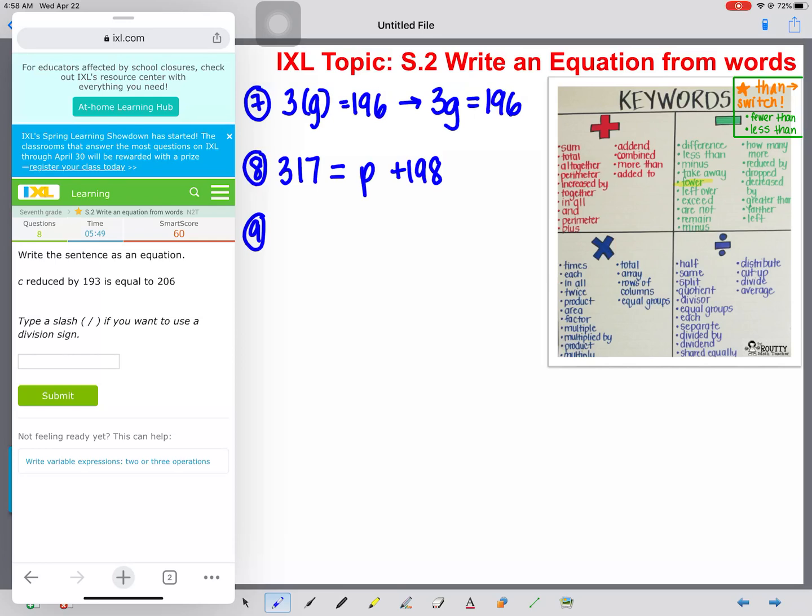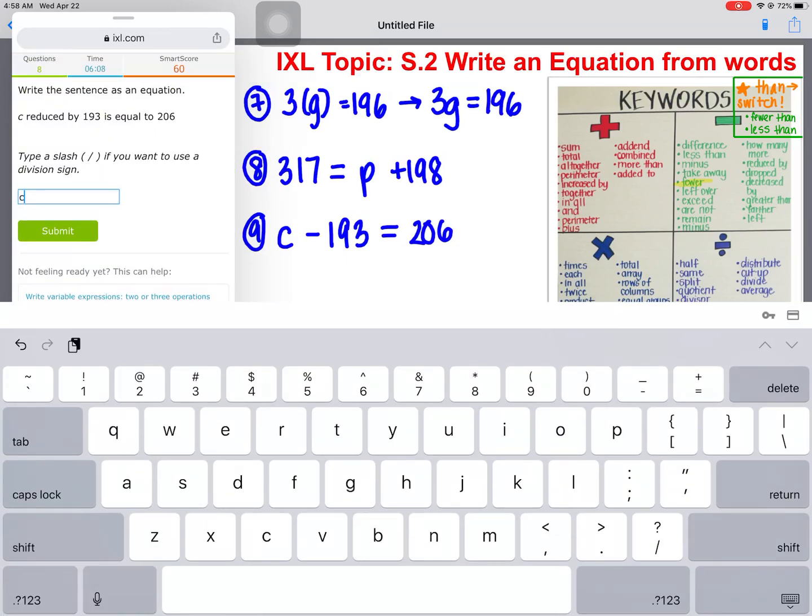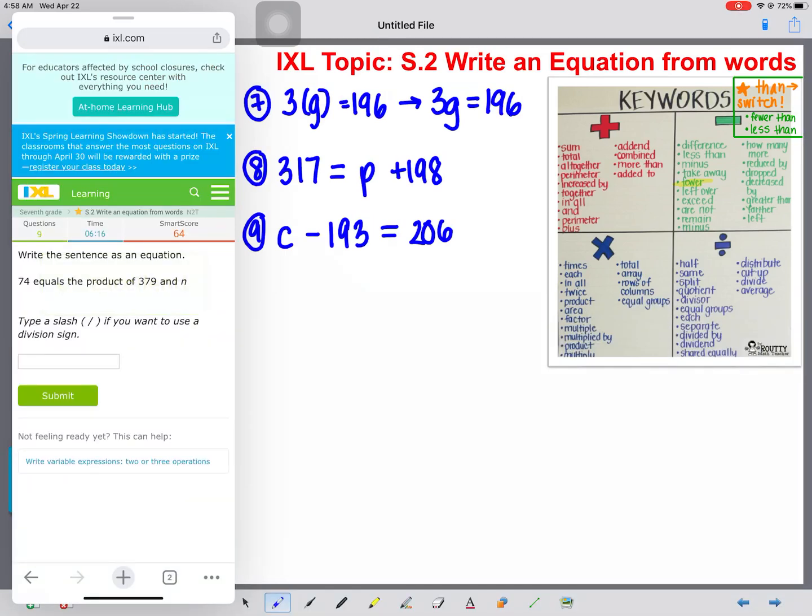Okay. C reduced by 193 is equal to 206. So C reduced by 193 is our next number, is equal to 206. We're going to type that in. We're going to type that in, C minus 193 equals 206.